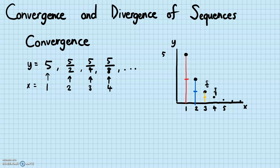Notice it's never going to cross onto the other side because if you keep multiplying by one-half, it can never be negative. It's going to get closer and closer to the x-axis, which is when y is zero. So the graph is becoming closer and closer to zero — this is what convergence means. It means it's getting closer and closer to some value.